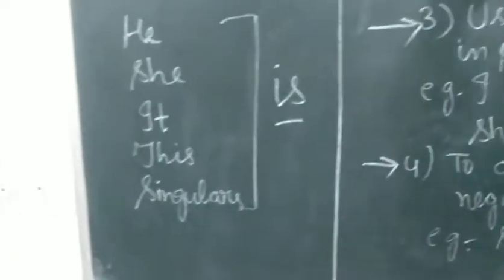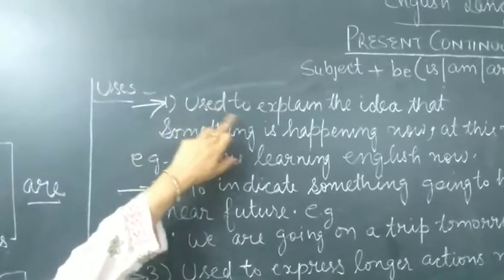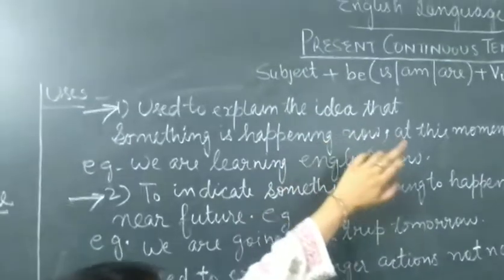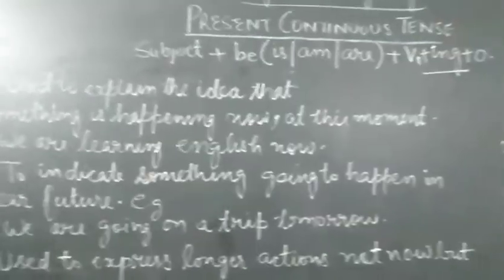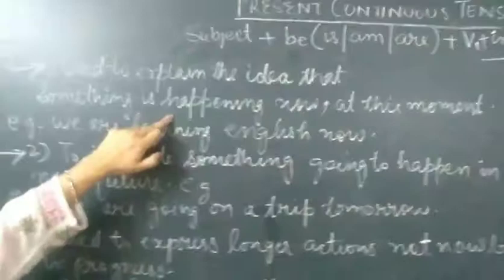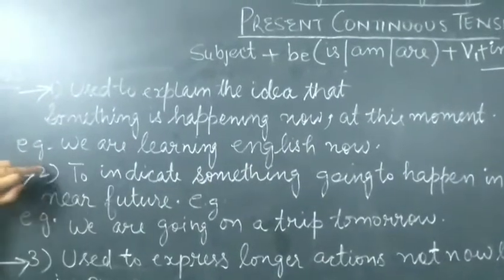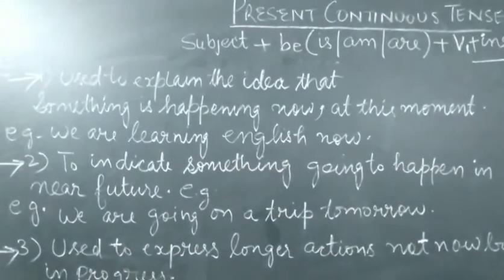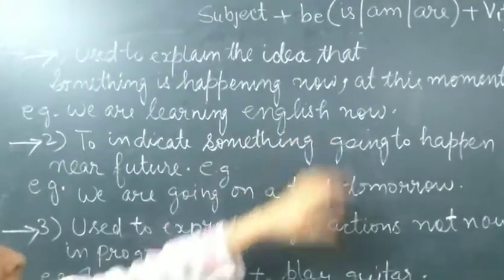Now, here come the uses. Where to use present continuous tense? The very first use is, it is used to explain the idea that something is happening now at this moment. And, jab bhi koi action abhi ho raha hai, at present, in present time, at this moment. That action is represented with present continuous tense. So, I have taken one example here. We are learning English now.